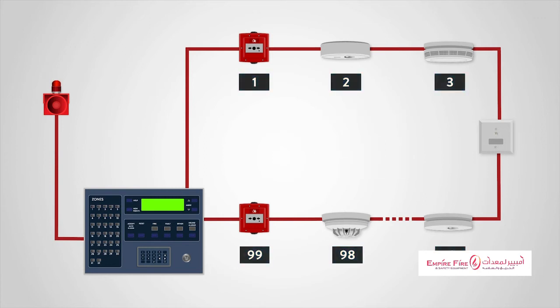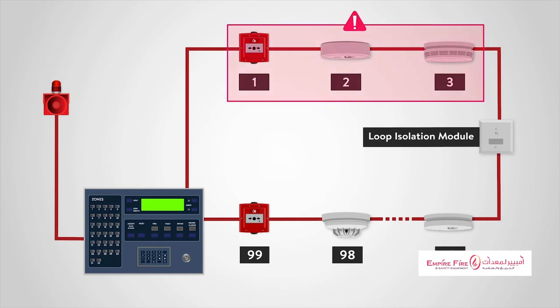It is common for the loop to be fitted with loop isolation modules, so that the loop is sectioned in order to ensure that a short circuit or single fault will only cause the loss of a small part of the system, allowing the rest of the system to function normally.